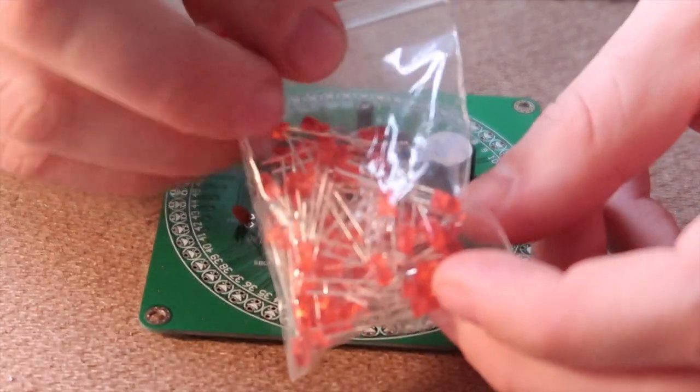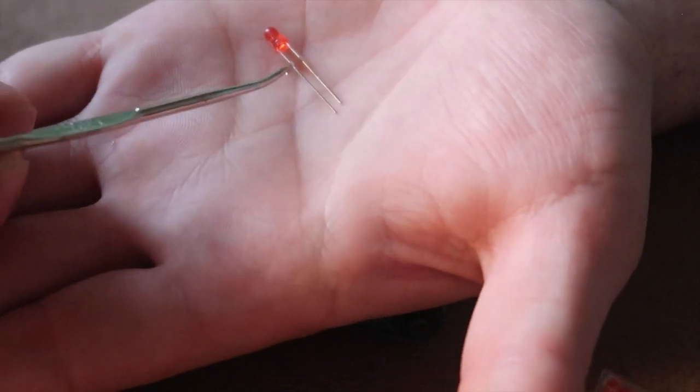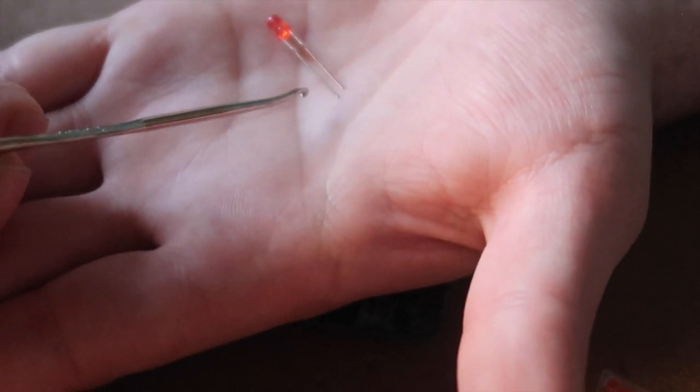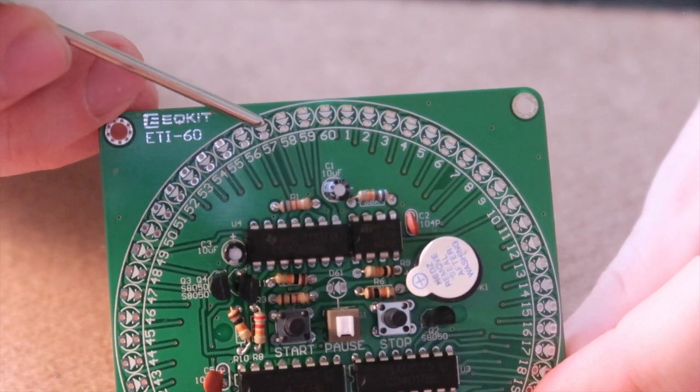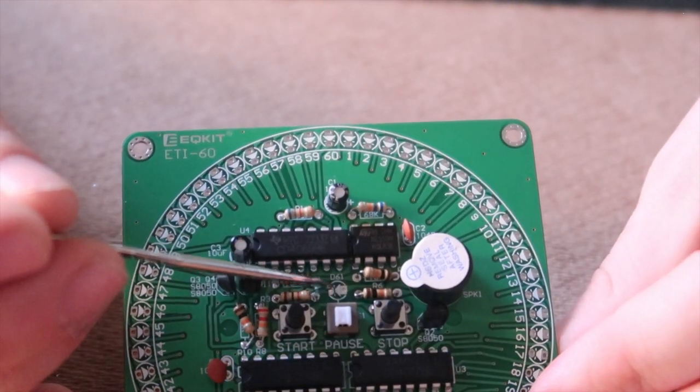The last step is to connect the LEDs. The longer side of the LEDs, the positive or the anode, it goes behind the arrow. Don't forget that there's one over here as well.